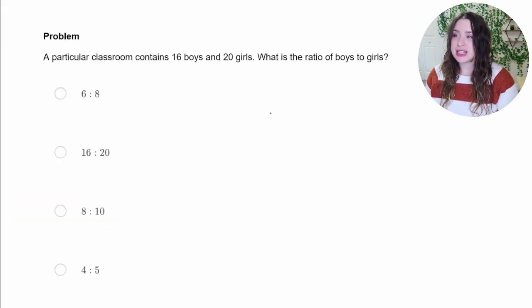All right, this question says a particular classroom contains 16 boys and 20 girls. What is the ratio of boys to girls? So we want to make sure we pay close attention to this order. It's boys to girls. So in our ratio, we're going to expect it to be boys to girls like that. Luckily, this is written in the same way, boys to girls. So 16 boys to 20 girls.